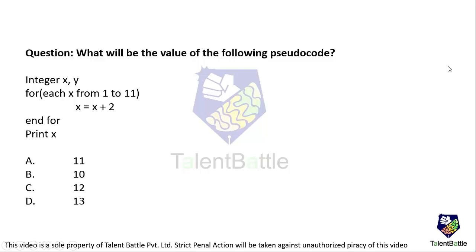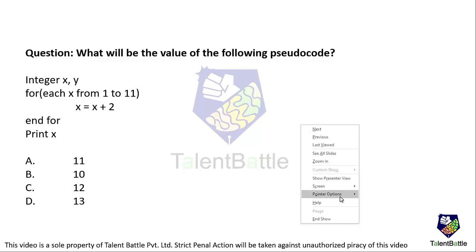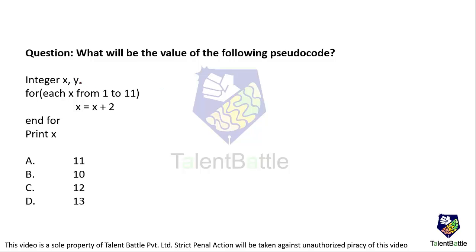What will be the value of the following pseudocode? They have provided a pseudocode and you have to check what is the output. First, integer x and y are declared, and there is a for condition: for each x from 1 to 11. Inside the loop we have the statement x equals x plus 2, and after the loop we print the value of x.